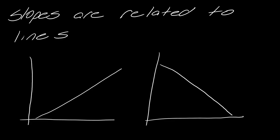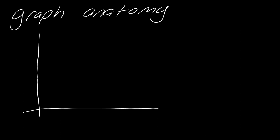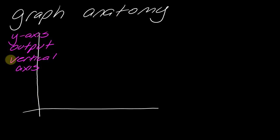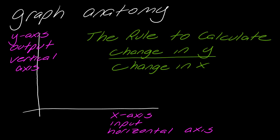Slopes are related to lines and you can determine a slope from a graph. We do have to review a little bit of graph anatomy to do this. The big things you need to know are the two sides of the graph. This is the y-axis — you could think of this as your output or vertical axis, and this is always the top part of our slope. The other is the x-axis, or the input or horizontal axis. When we calculate, it's always the change in the y's over the change in the x's.